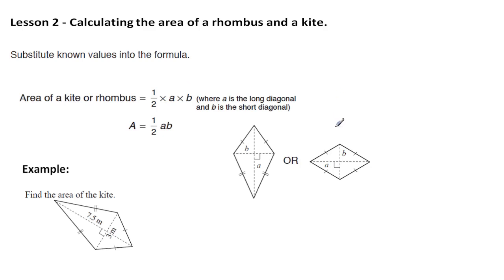And if you look at the diagrams you can see that A is the long diagonal and B is the short diagonal. So we only need to know the lengths of the diagonals to work out the area of these shapes. Now let's have a look at a rhombus first of all.